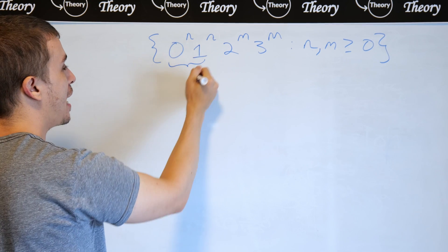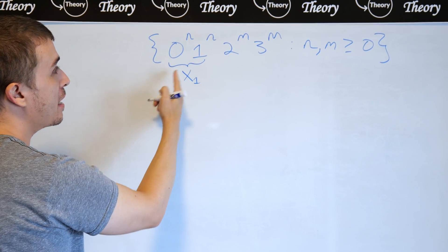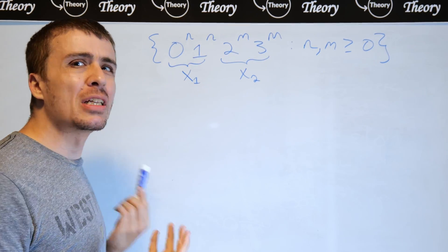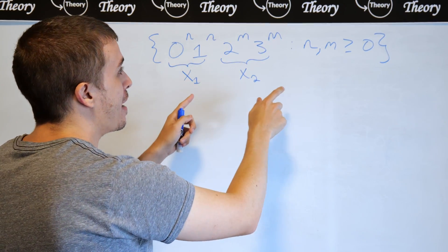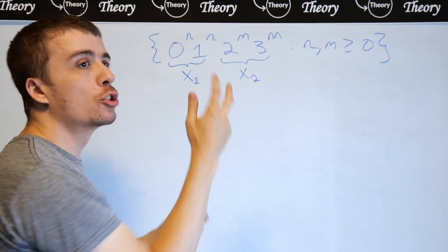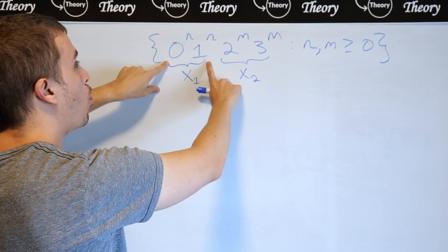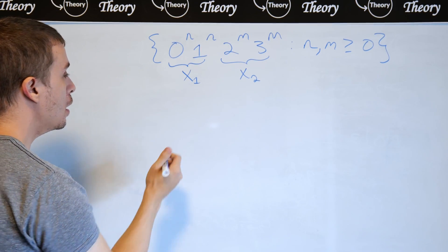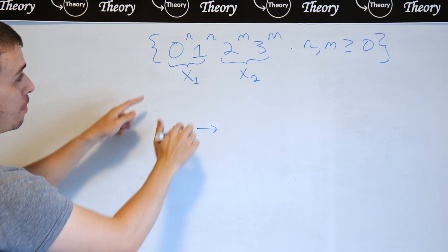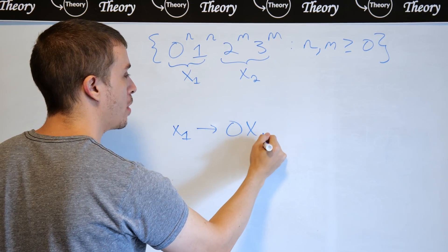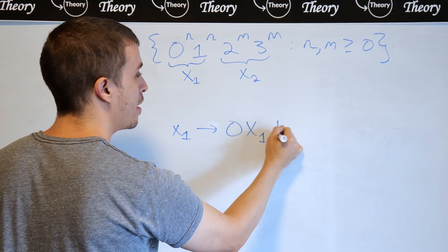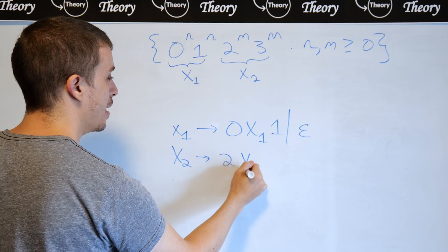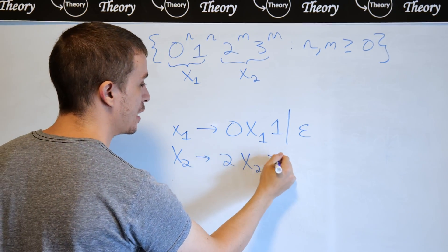I'll have a variable X1 make the zero-and-one part, and another variable X2 make the two-and-three part. They're essentially the same idea because there's no relation between n and m — it's just changing characters while the essential structure is unchanged. X1 makes 0^n 1^n, which is fairly easy: zero on the front, recursively go in, one on the end, or empty. X2 is exactly the same idea but with X2 and the terminals two and three instead of zero and one.